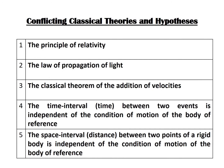The five conflicting theories were: the principle of relativity; the law of propagation of light; the classical theorem of the addition of velocities; the time interval between two events is independent of the condition of motion of the body of reference; and the space interval between two points of a rigid body is independent of the condition of motion of the body of reference.